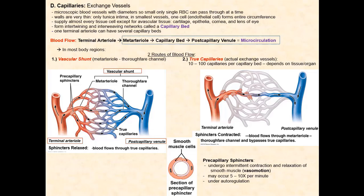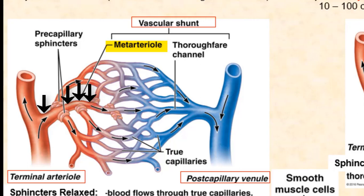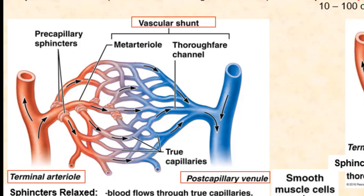The first route of blood flow consists of a meta arteriole leading to a thoroughfare channel, which then drains into a post capillary venule. This is called a vascular shunt, where blood flows from meta arteriole to thoroughfare channel to post capillary venule. It is important to note that there will be no exchange of materials, substances, or gases when blood passes through a vascular shunt. This route allows blood to directly go from the arterial system to the venous system, bypassing any capillary exchange.